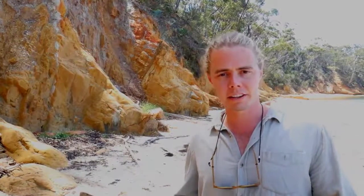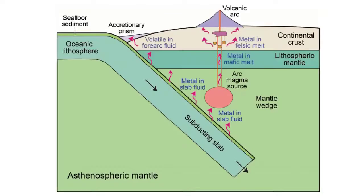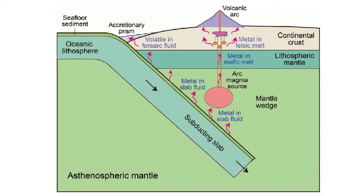In an island arc tectonic setting, as you probably know from previous videos, this is where you have two plates moving towards each other, where the older, denser plate will subduct under the younger, less dense plate. As this plate is subducting, volatiles and other material in the subducting slab move upwards into the mantle wedge, causing melting. Geologists call the melts that form there arc magmas or arc melts.